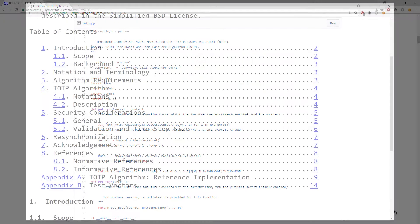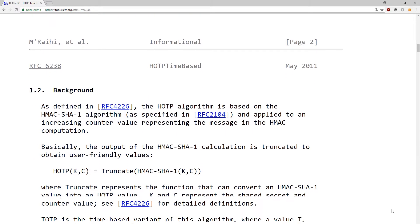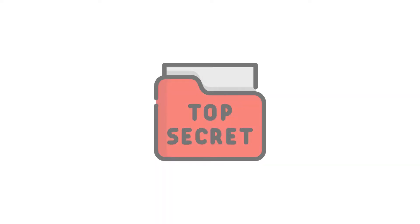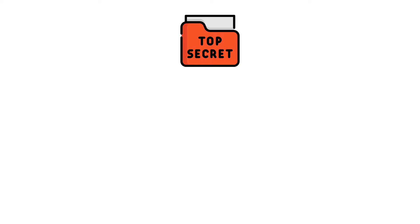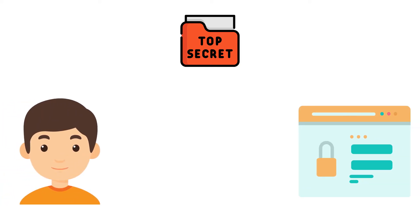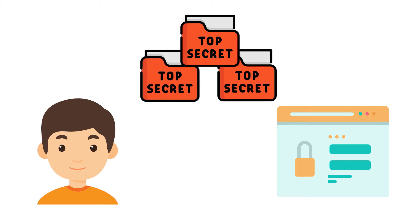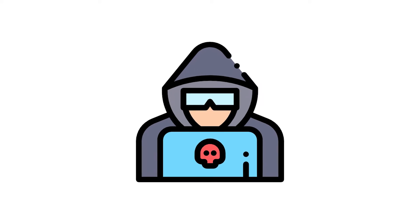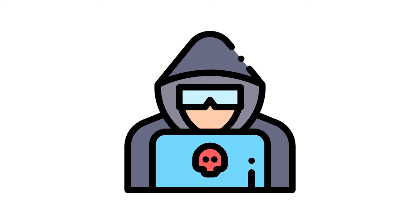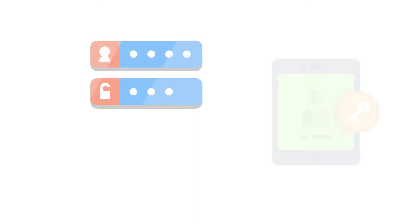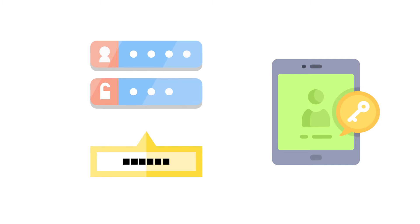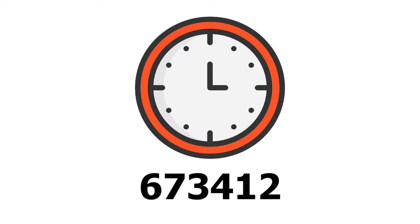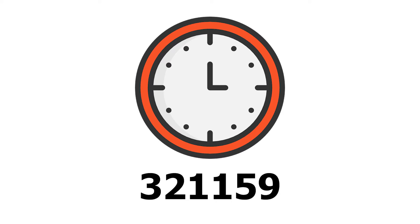The TOTP algorithm is an open standard available to everyone. The security of the algorithm is based on the so-called secret — a randomly generated value stored by both parties that take part in the authentication, for example a website and a user. If an attacker can guess or steal this secret, he can gain access to an account using the token. The whole idea of two-factor authentication is that after providing the correct login and password, the user must enter several digits of a token whose value changes over time — making it impossible to reuse.